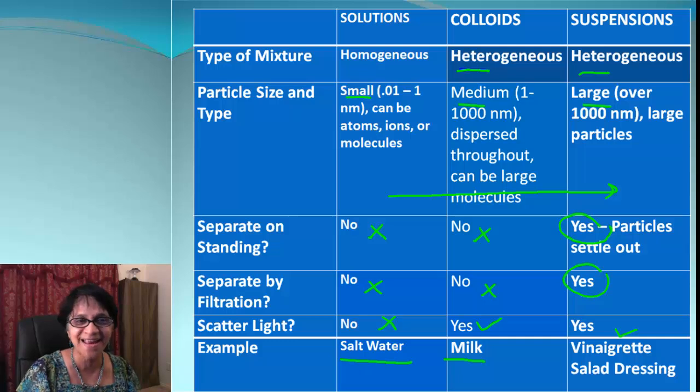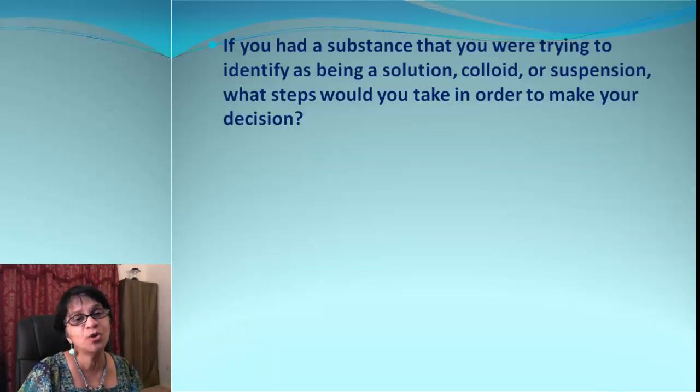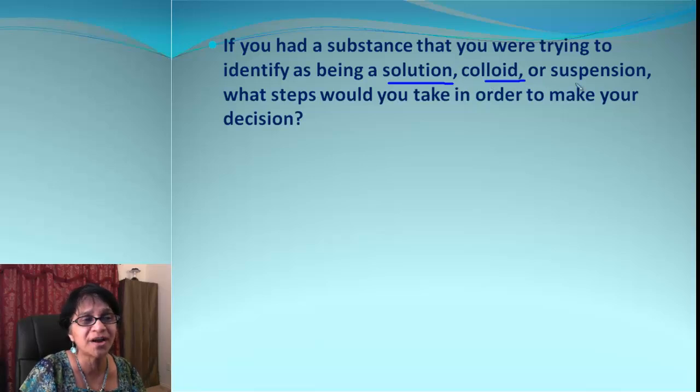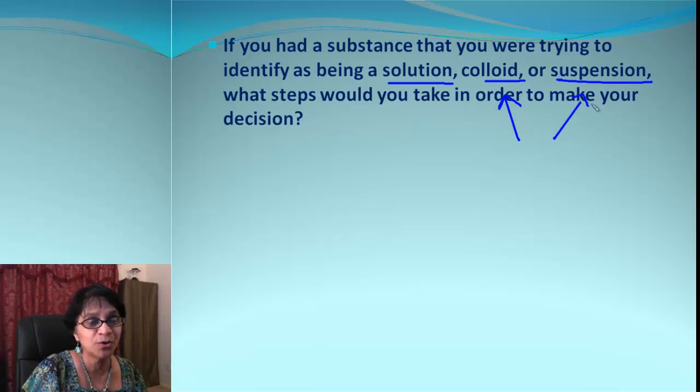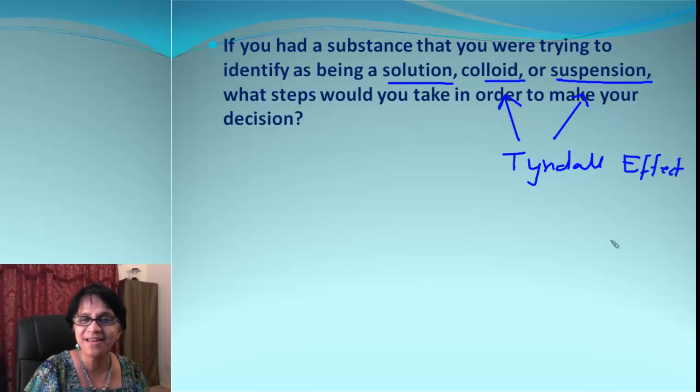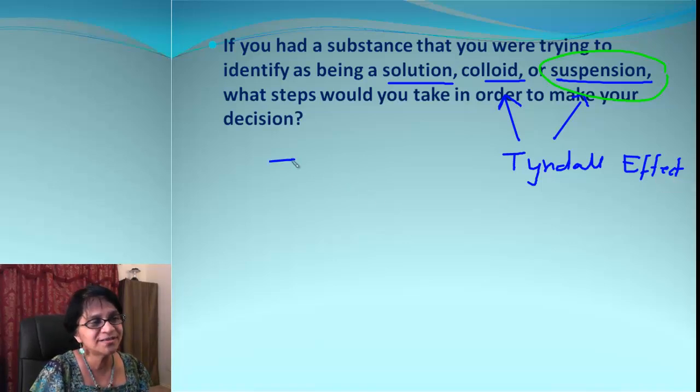If we are given an unknown substance and our job is to classify it as a solution or a colloid or suspension, how do we find out? We use the properties which we learned just now. So colloid and suspension, they have a property which is called the Tyndall effect, by which they can scatter the light. Solutions will not have that property. Also, you know very well that a suspension we can separate easily the components when we let it stand. So we will begin with Tyndall effect first.